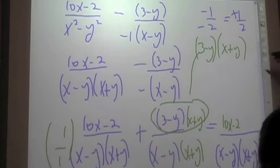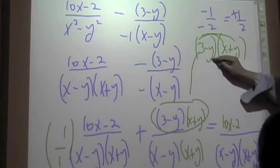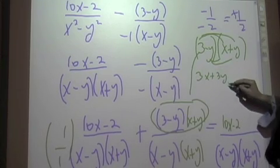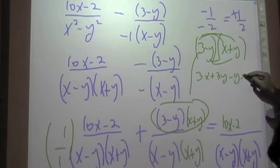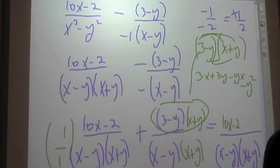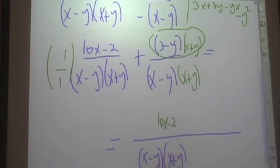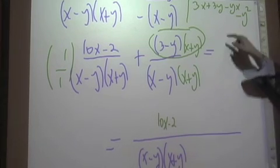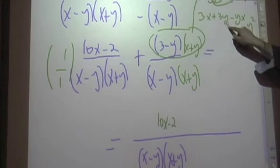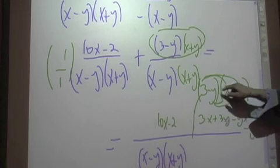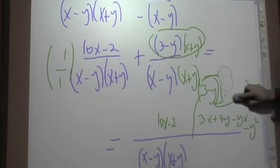So what do we get when we foil this? We get 3x plus 3y minus yx, or xy, minus y squared. And all of that has to be written down. And all of that has to go, and our lowest common denominator is x minus y, x plus y. And we just found that when we've foiled out all of this stuff, okay, we went 3 minus y times x plus y. We've foiled that out.